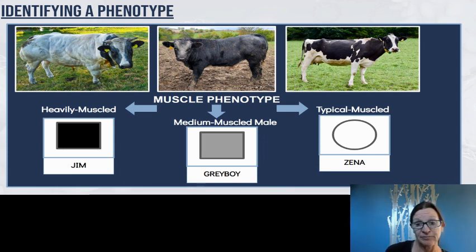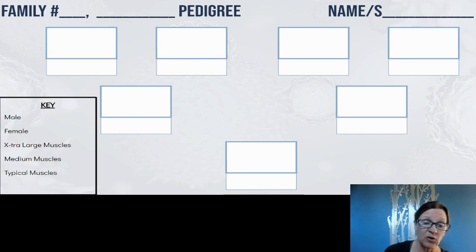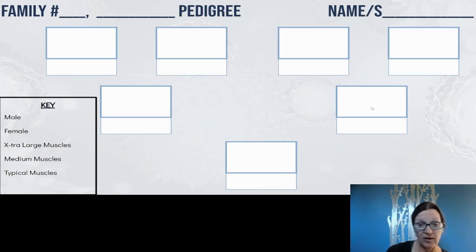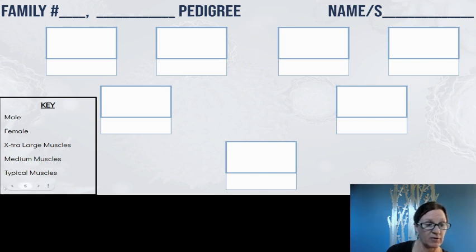Here's what your pedigree chart is going to look like. Each line is a different generation: the youngest individual goes in the first row, their parents go in the second row, and the grandparents of that individual go in the top row.